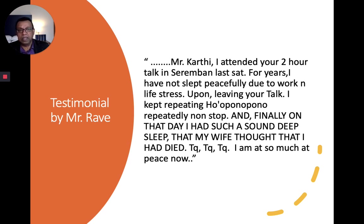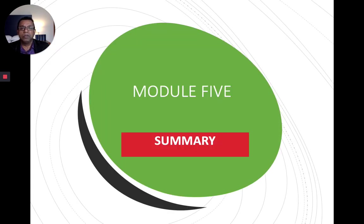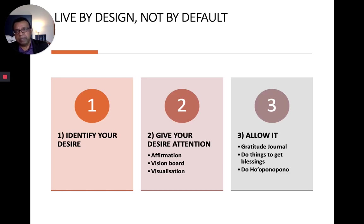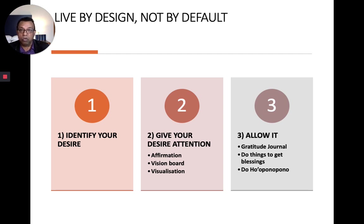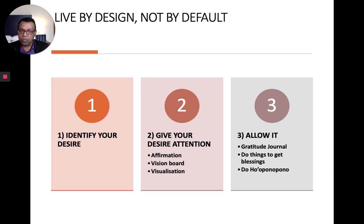Do contact me through email — keep in touch and I will guide you. Module 5 is just a summary. You can live by design, so why live by default? Living by default means living based on your upbringing, culture, religion, education, and friends. Live by design: identify your desire and write down what you want; give your desire attention through affirmations, vision board, and daily visualization; and allow it to happen by doing a gratitude journal, doing things that give blessings, avoiding curses, and doing Ho'oponopono.